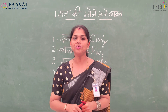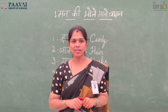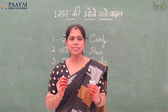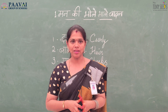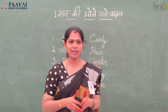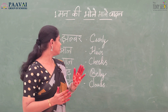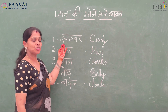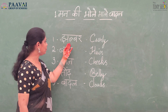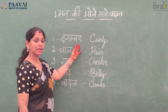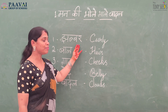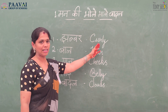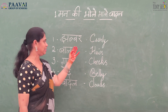Okay children, did you understand the poem? So now let's learn some new words from the poem today. Look at the board. The first word is Jhabbar — Jhabbar ka matlab hai curly, C-U-R-L-Y, curly.